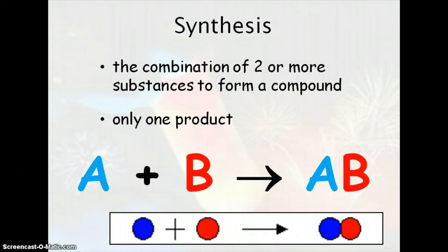So here, a general form would be A plus B, or little blue circle plus little red circle, is AB, or blue and red circle stuck together. So just one product.